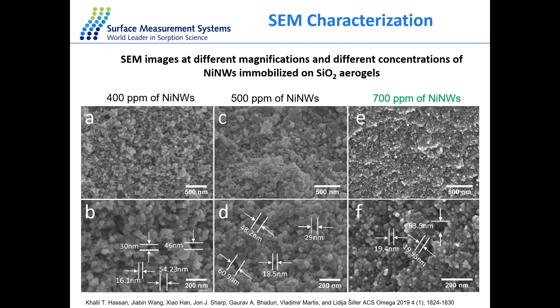This catalyst went through traditional characterization processes like SEM and XRD. Looking at the scanning electron microscope images at different magnifications of nickel nanowires catalysts on silica aerogels, the SEM images confirm the mesoporous nature of the support. Estimation of the pore diameter shows that the majority of pores is in the range of 20 to 40 nanometers — clearly shown for 400 ppm and 500 ppm nickel nanowires. For 700 ppm nanowires, we also see some macropores with pores larger than 50 nanometers.